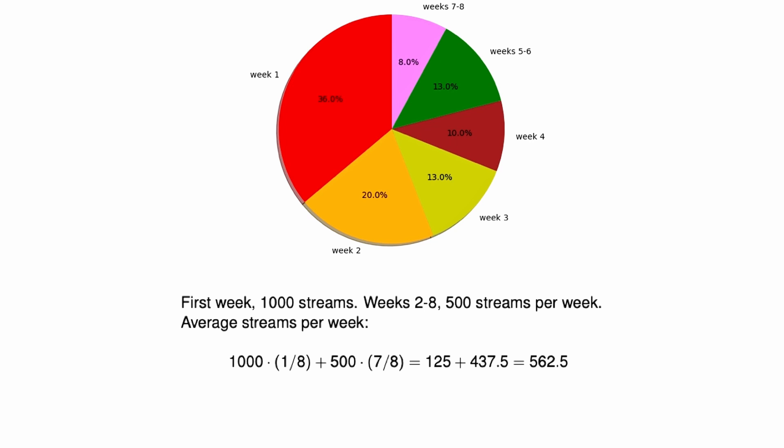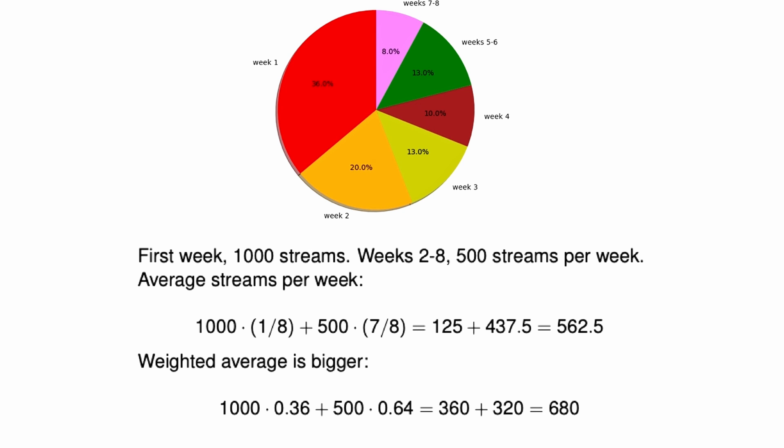Let's make an example. Suppose your track had 1,000 streams in the first week, then from week two to eight it had only 500 streams. On average, the track had 562.5 streams per week. But if you compute the weighted average, the result is different, because 1,000 is multiplied by 0.36, which is far bigger than one-eighth.